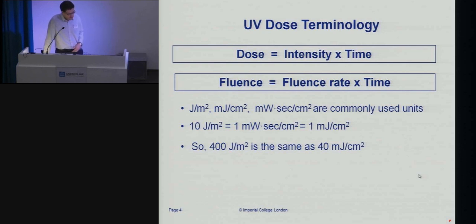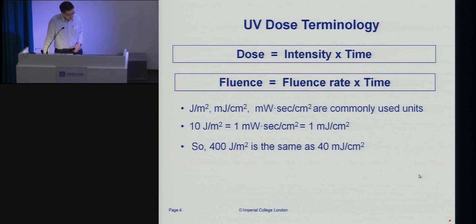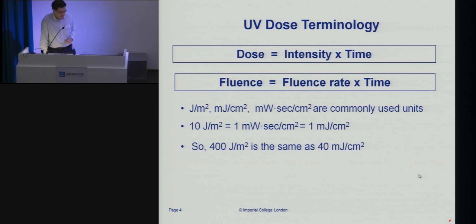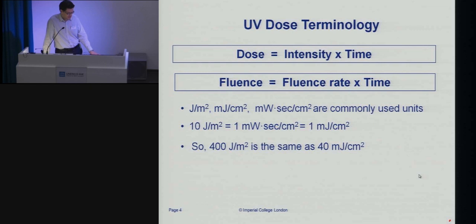Typically we're talking about units of joules per surface area — sometimes joules per square meter, millijoules per square centimeter, or watts-seconds per unit area. The key thing to remember if you're comparing different papers is that 10 joules per square meter is not the same as 10 millijoules per square centimeter — there's a factor of 10 difference there. A commonly targeted dose in regulations in Europe, for example, is a minimum of 40 millijoules per centimeter squared, which is the same as 400 joules per square meter.